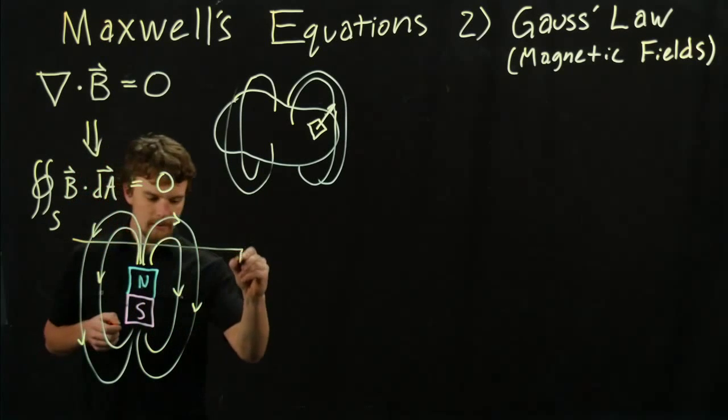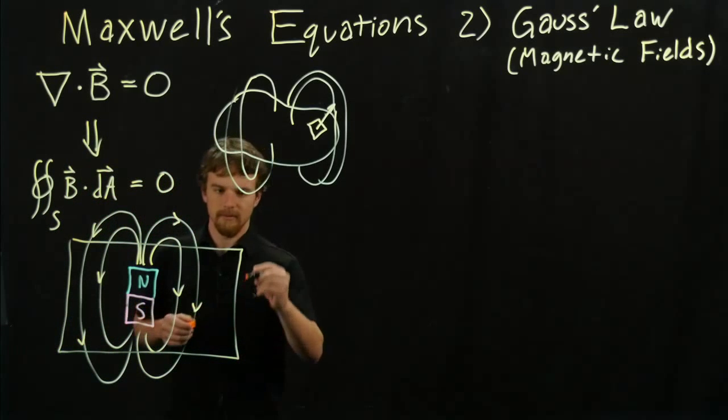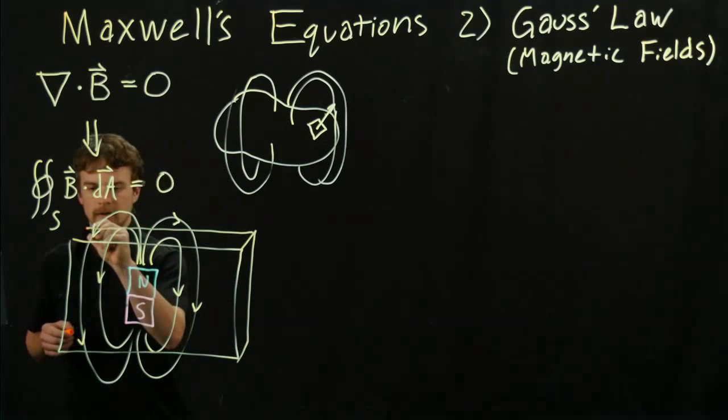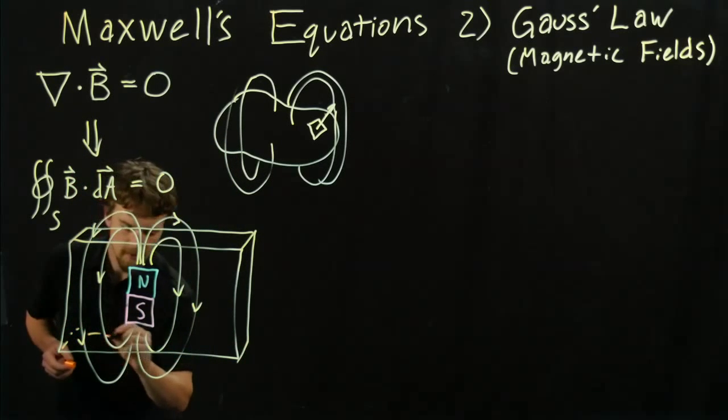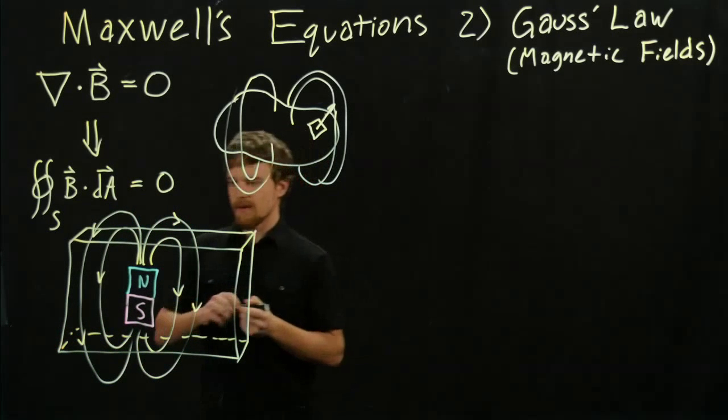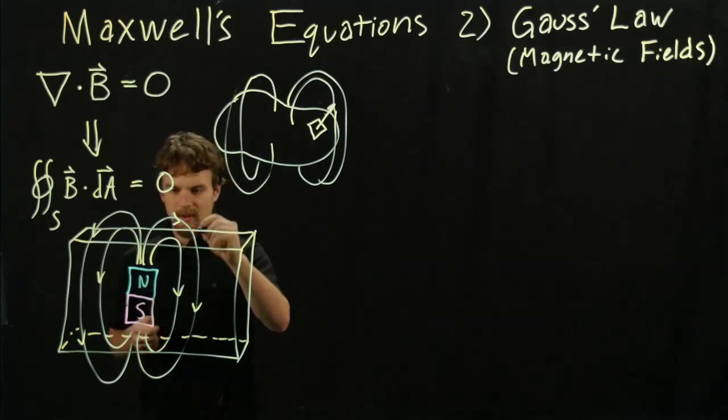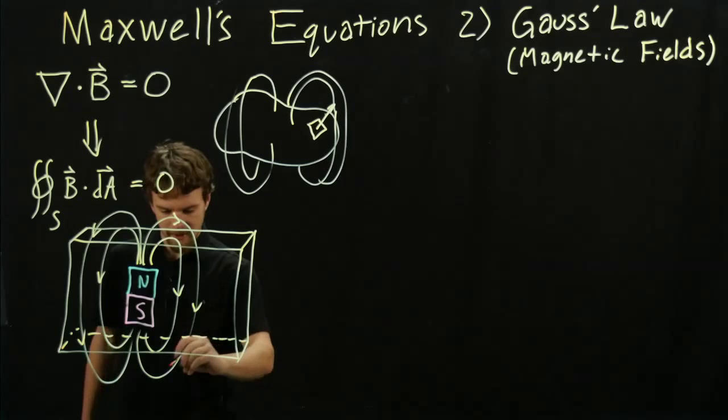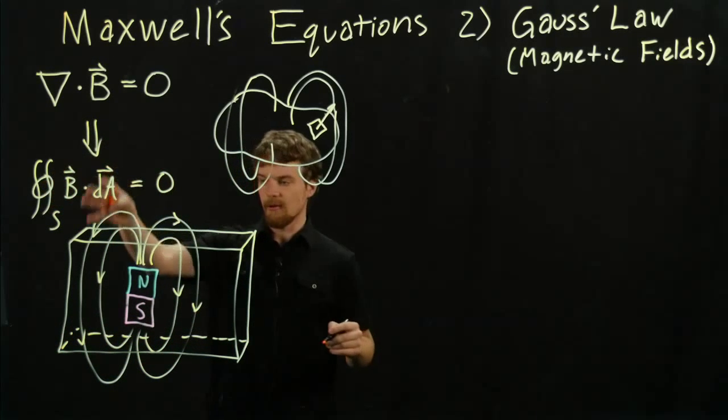We could draw this shape, a box—imagine this being three-dimensional. We could see that all of the field lines flowing, we have some field lines flowing out here and some of them flow back in, and then some flow out down here and they flow back in. If we did the math, if we did this integral over this surface, it would amount to zero.